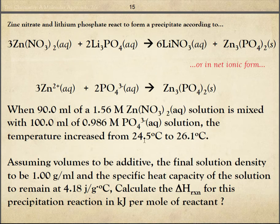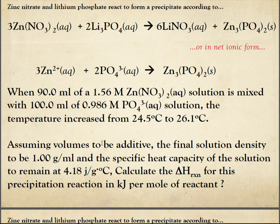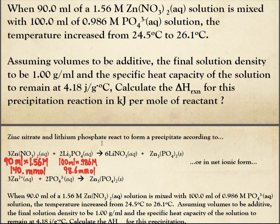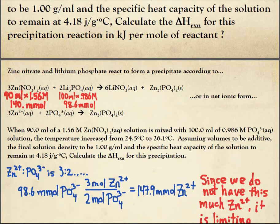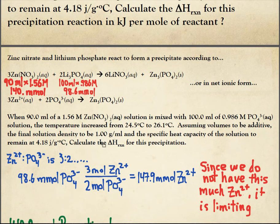Temperature is increased from 24.5 to 26.1. Assuming the volumes are additive, the density is 1, and the specific heat, that should be a capital J. I apologize. It's the same as that for water. What's the delta H for this reaction in kilojoules per mole? Well, I'm thinking Q is coming on, but do I need a... Ah, a chihuahua. I do. It's a limiting reactant question.